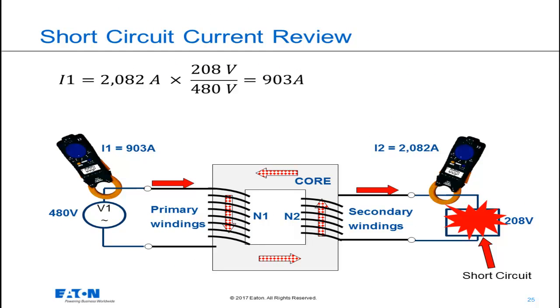This is a different way of looking at the exact same calculation we just made. During this faulted condition, if I place a current meter in the secondary and primary conductors of this transformer, the ammeter on the secondary would read 2082 amps, the current being delivered to the short circuit. The ammeter on the primary would read 903 amps, which is calculated in the equation at the top of this slide.